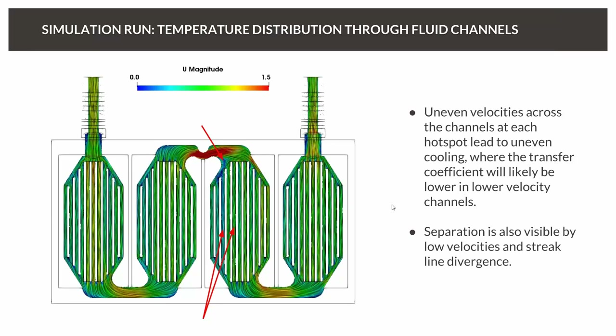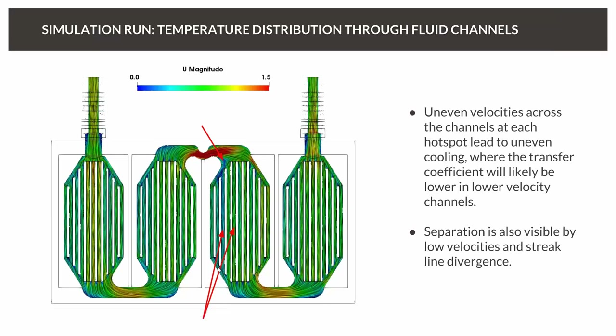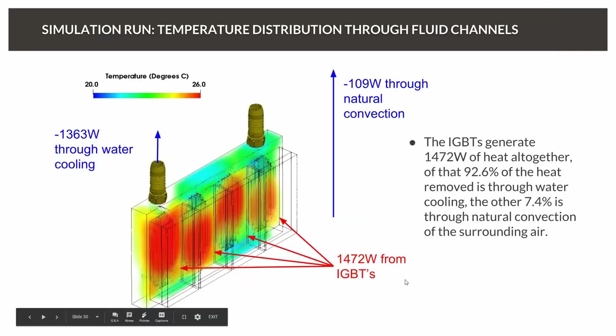Looking at velocity, the flow separations are clearly visible — fluid is significantly faster through the center channels and slower toward the outside. This uneven flow affects cooling efficiency, since faster fluid removes more heat along its channel. A volume rendering of heat within the water cooling block shows the same observations in 3D: the hot region near the IGBTs transfers heat to the cooling block, with higher temperatures toward the warm-water outlet end.